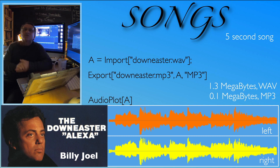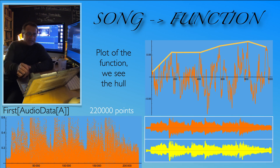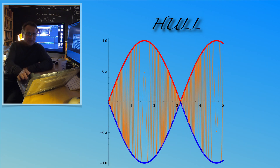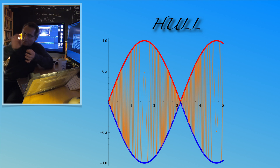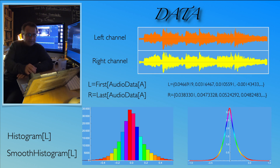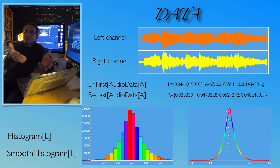Sampled at 44,000 points per second, that's a relatively large data set — 1.3 megabytes, and compressed in MP3 it's 1.1 megabytes. We can visualize this with a mathematical audio plot. If we look at smaller parts of the waveform, we see more of how the function actually looks. In general, we only see the hull — the connections between the local maxima — because the function oscillates so many times.